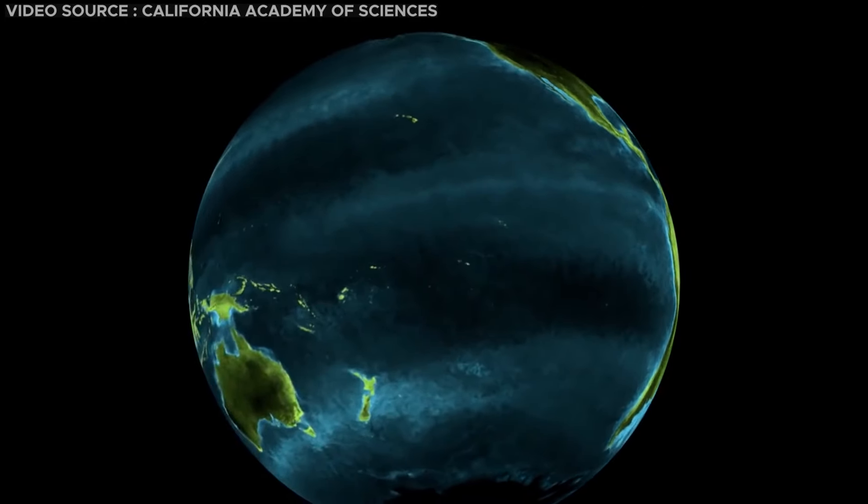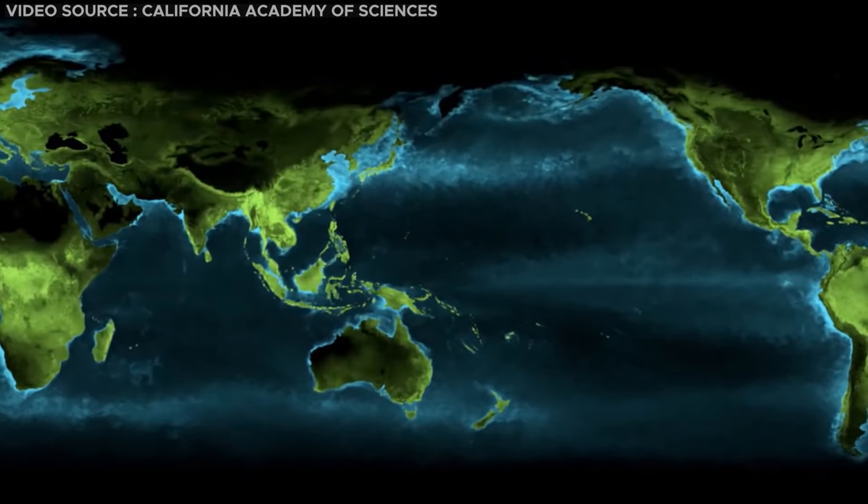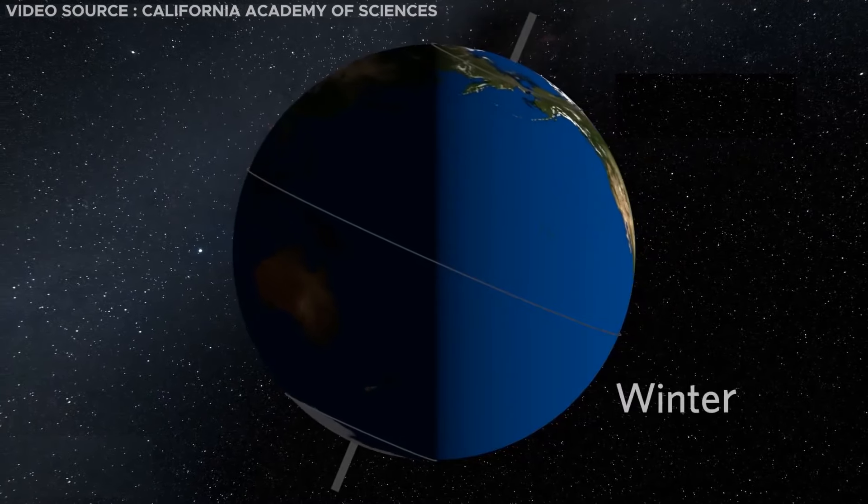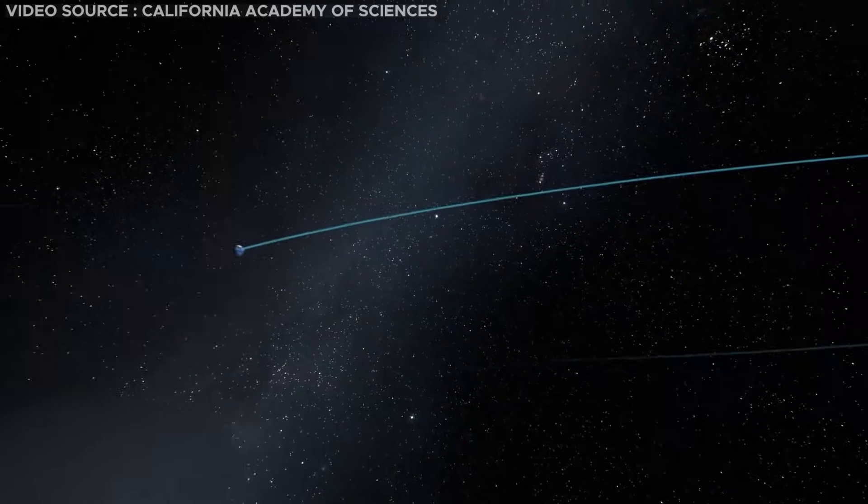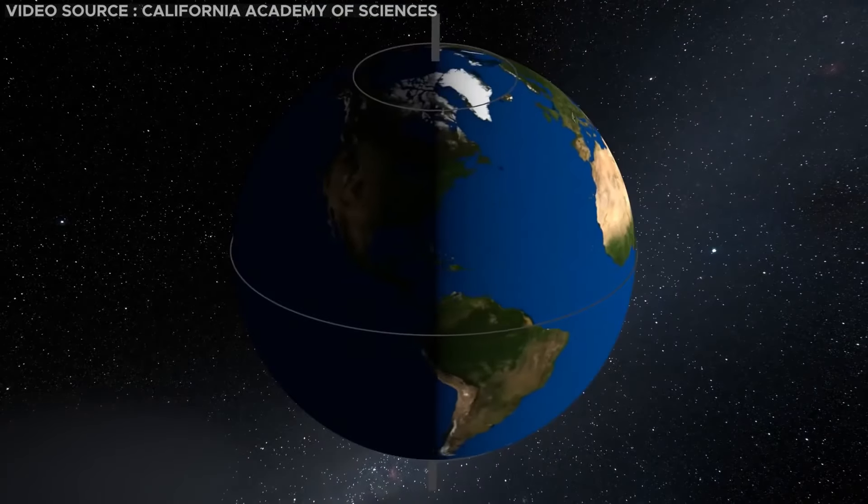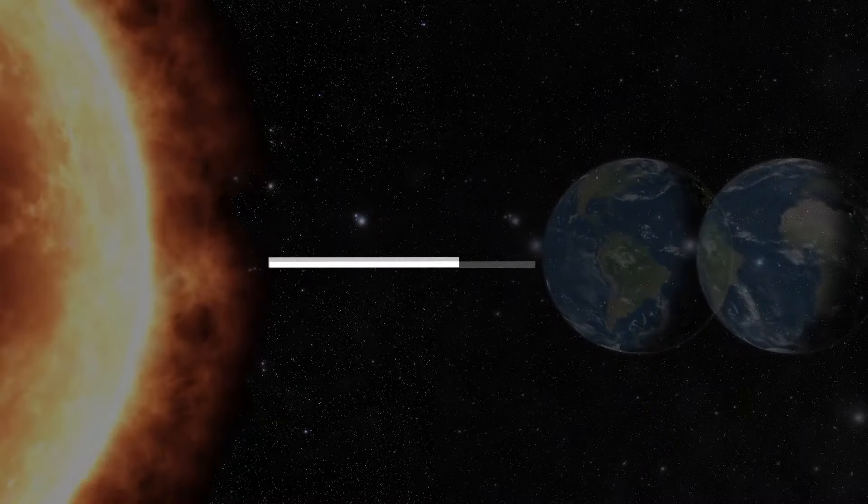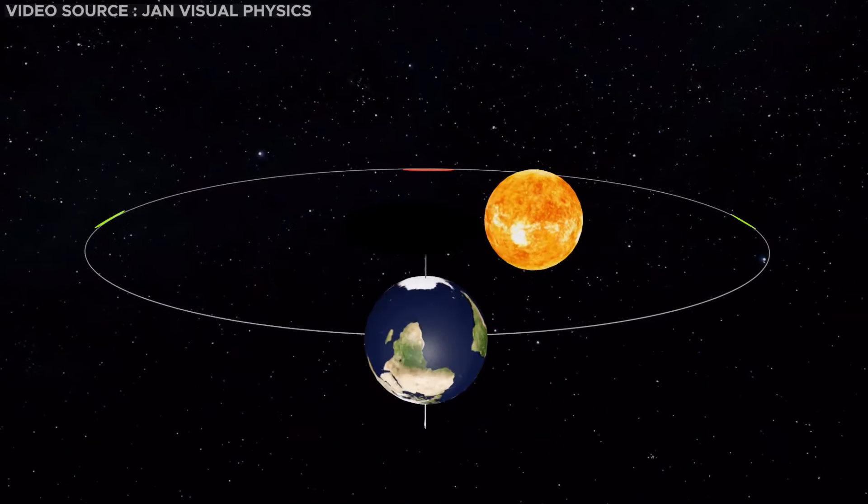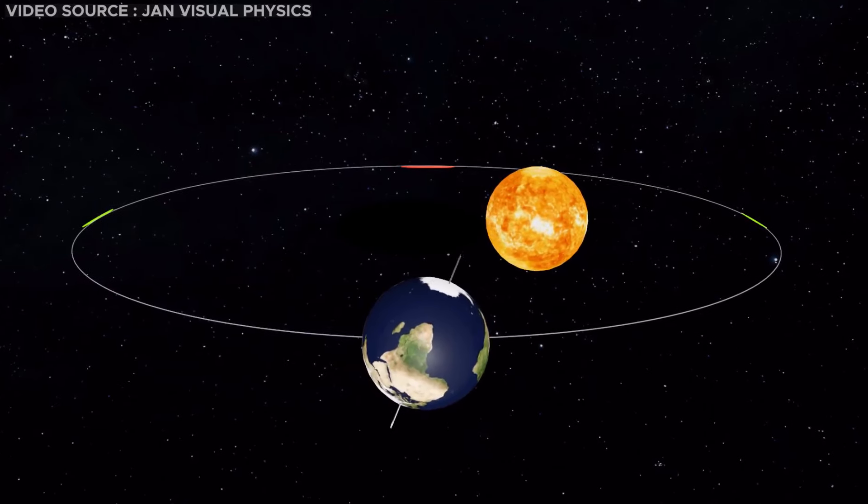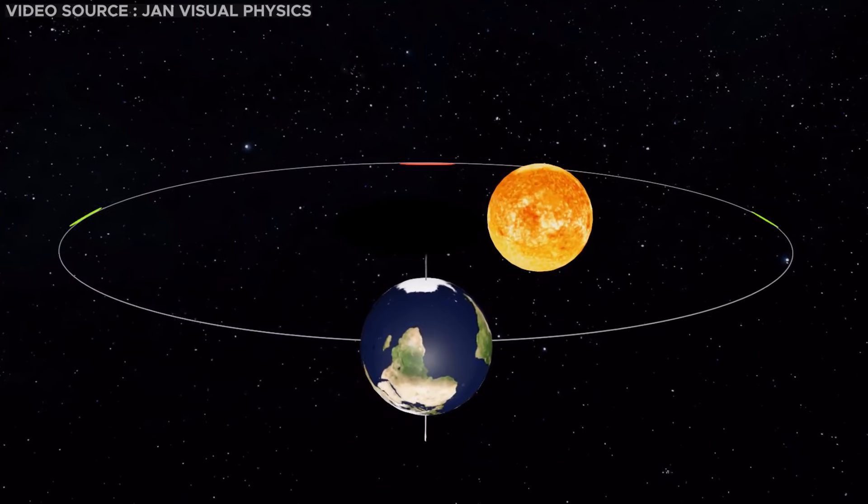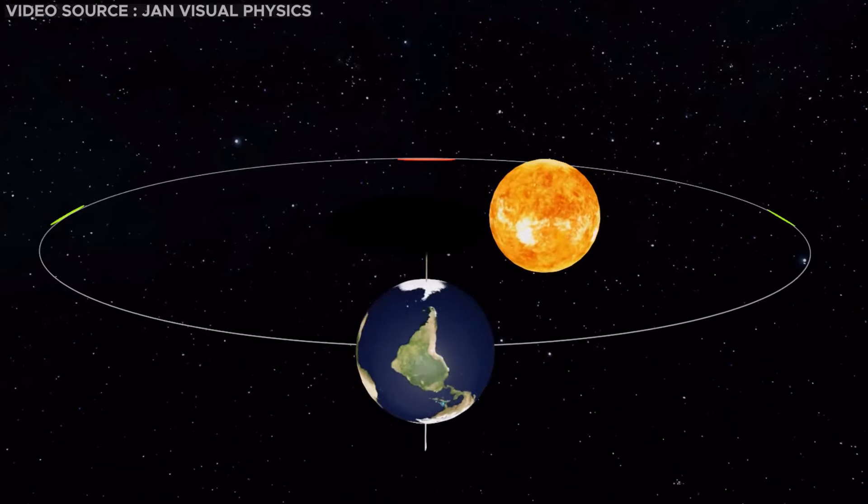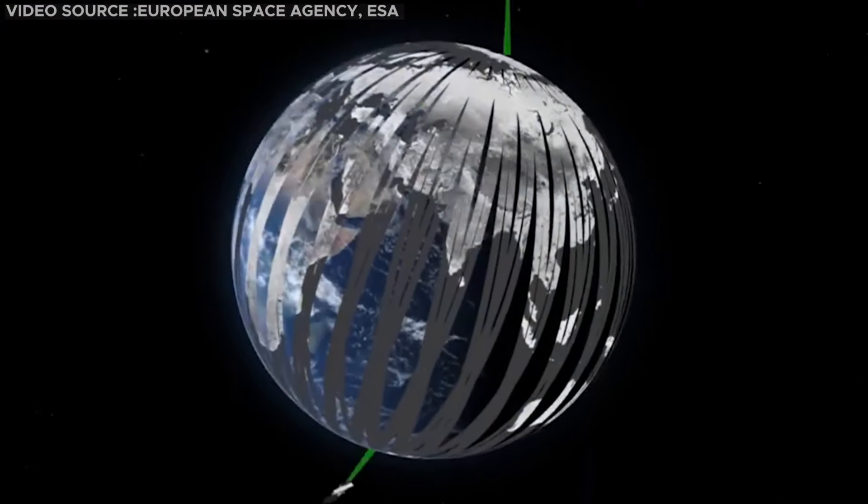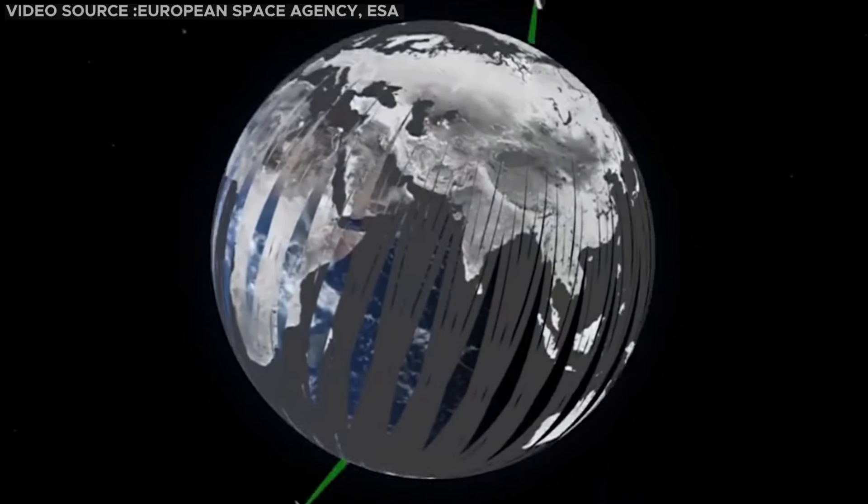Additionally, Earth's rotation speed experiences seasonal variations, accelerating during the northern hemisphere's summer and decelerating in the winter. This seasonal oscillation is influenced by Earth's orbit, bringing it closer to the Sun during winter and slightly farther away during summer. As a consequence of momentum conservation, when Earth moves nearer to the Sun, its rotation slows down to compensate for the heightened speed in the planet's overall motion. The interplay between these factors exemplifies the dynamic and intricate nature of Earth's rotational dynamics.